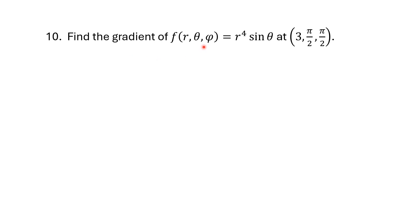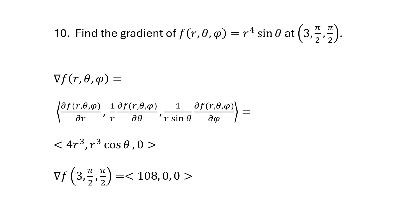Find the gradient of f(r, θ, φ) = r⁴·sin(θ) at (3, π/2, π/2). The partial with respect to r is 4r³·sin(θ). The partial with respect to θ is r⁴·cos(θ), divided by r giving r³·cos(θ), which evaluates to zero at θ=π/2. We evaluate each component and get our final answer.